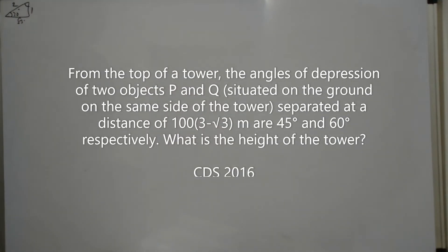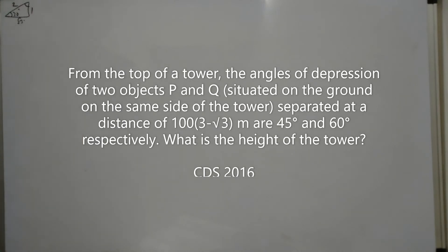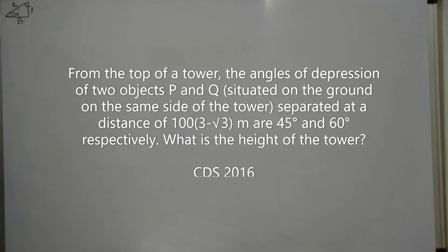The question is: from the top of a tower, the angles of depression of two objects P and Q situated on the ground on the same side of the tower, separated at a distance of 100√3 meters, are 45 degrees and 60 degrees respectively. Find the height of the tower.